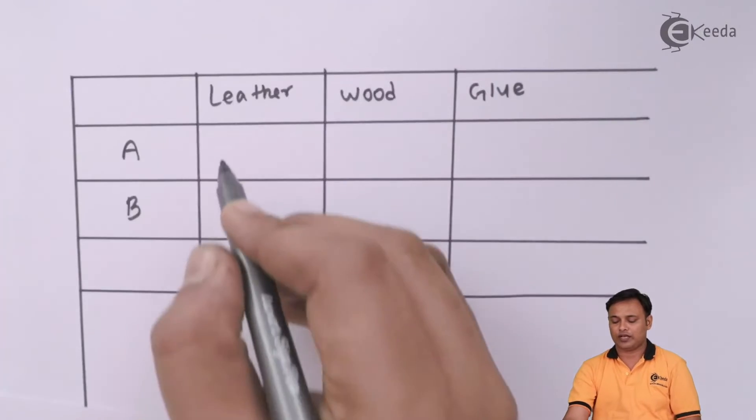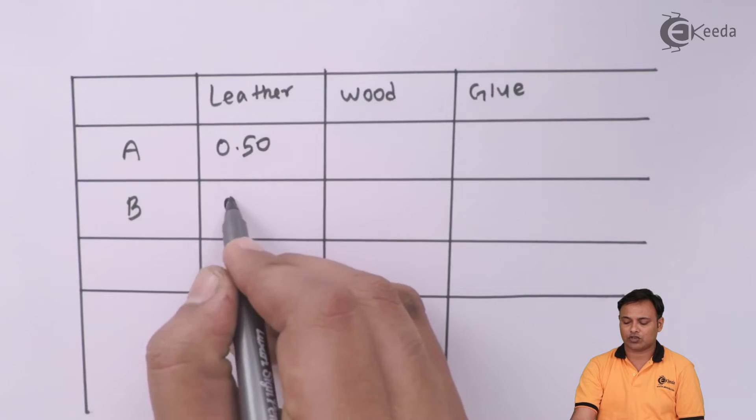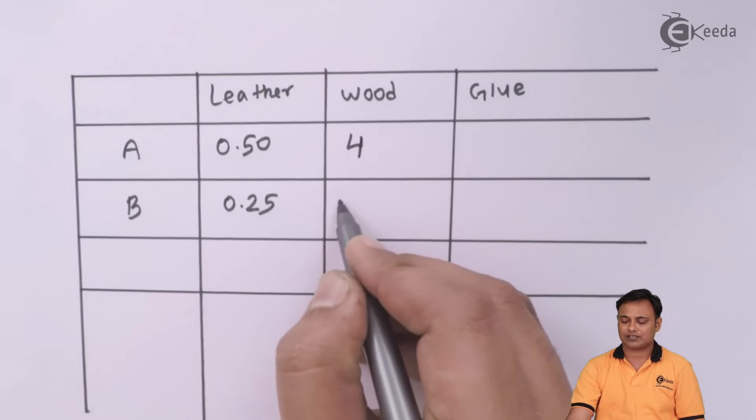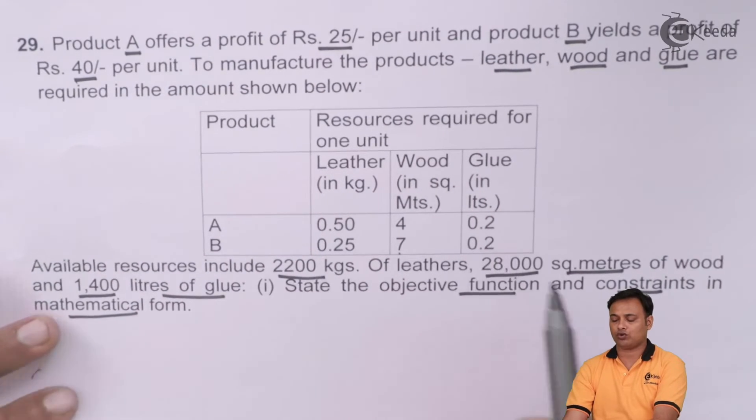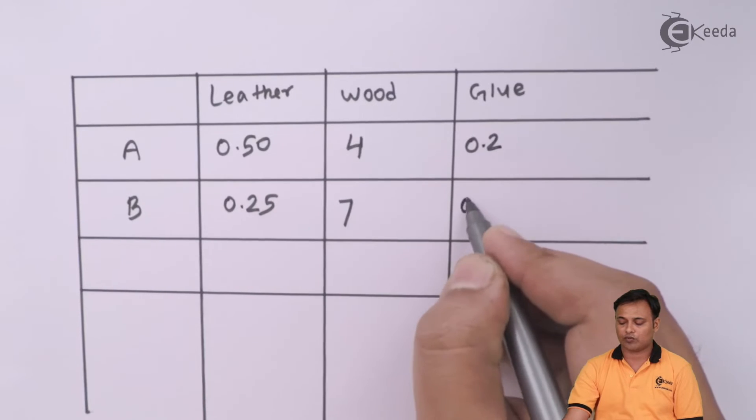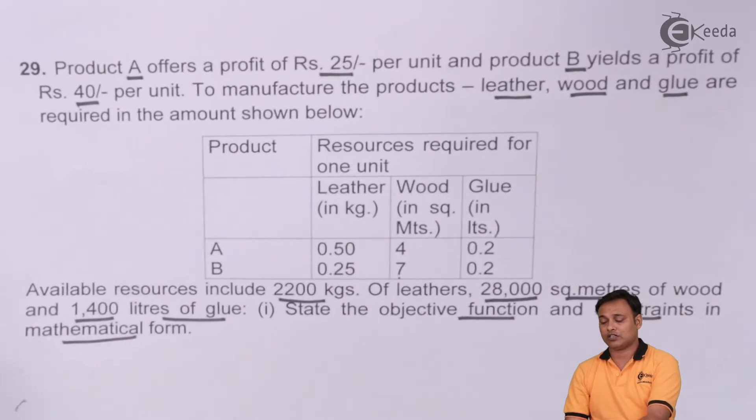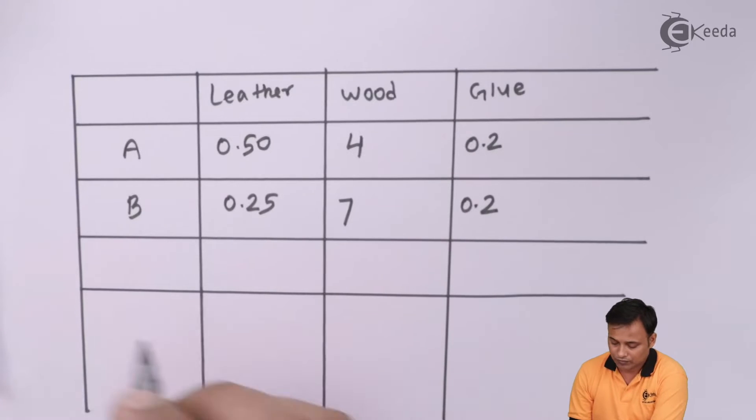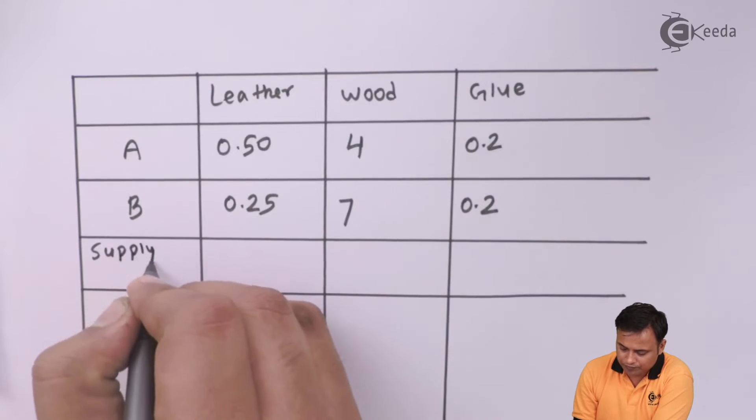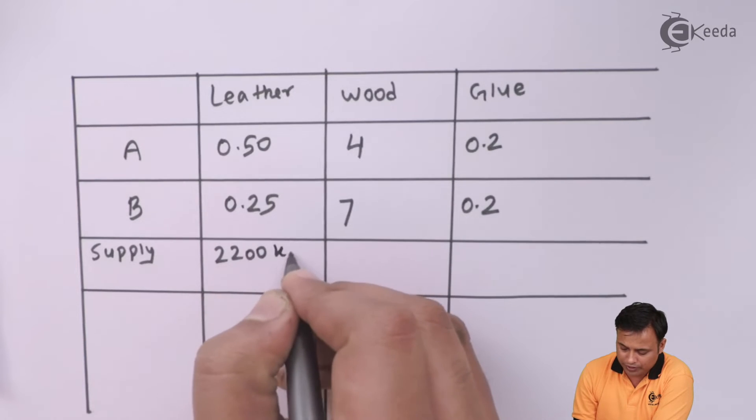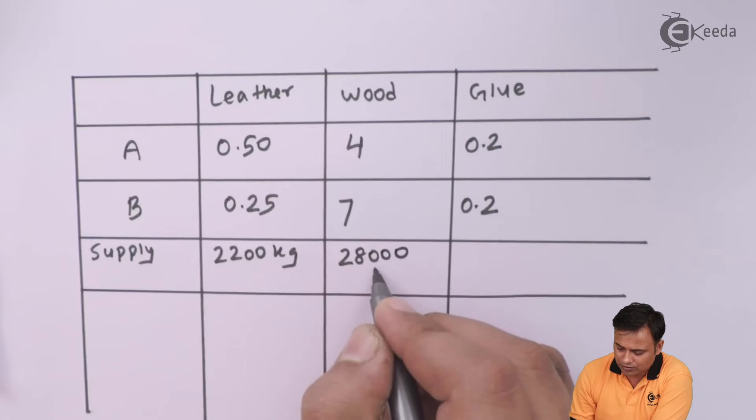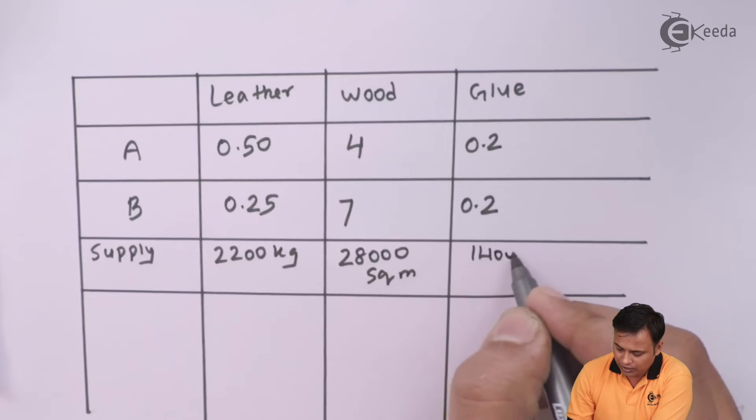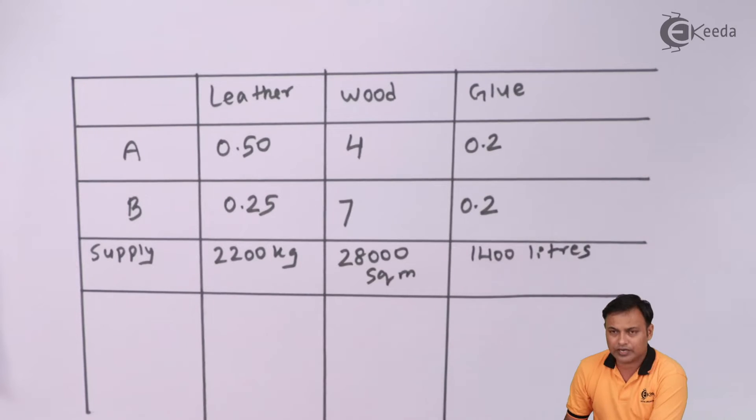We need 0.5 kg and 0.25. In case of wood, it is 4 and 7. In case of glue, it is 0.2 and 0.2. And then we are given the resources available: 2200 kg of leather, 28000 square meters of wood, and 1400 liters of glue.